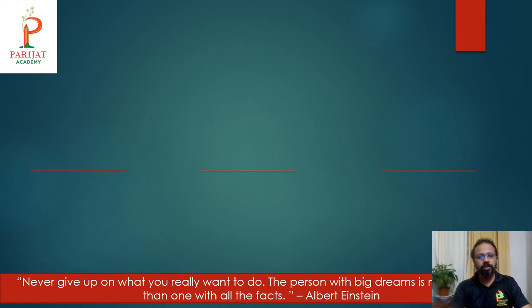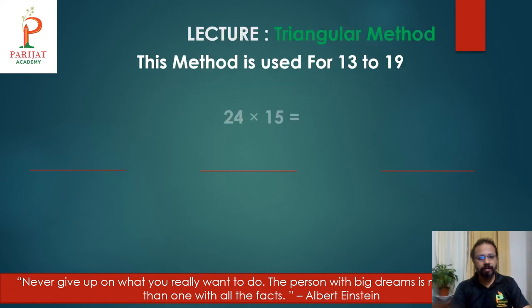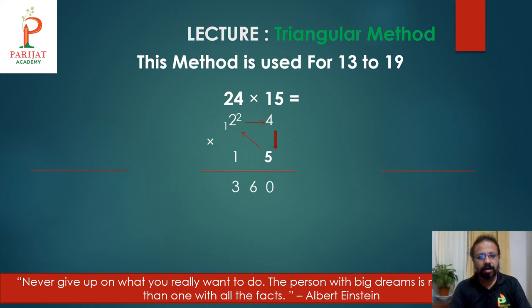Let's do some practice with some more examples. 24 times 15. How we will solve it? 4 times 5 is 20. Carry over 2. 5 times 10. 5 times 10. 10 plus 2. 12. 12 plus 4. 16. Carry over 1. And I will add 1 into. Get 3. So, 2 plus 1 is 3.